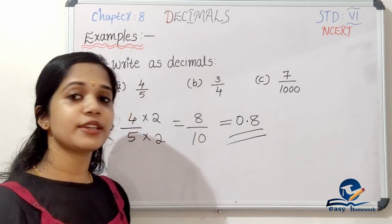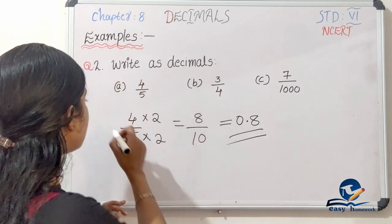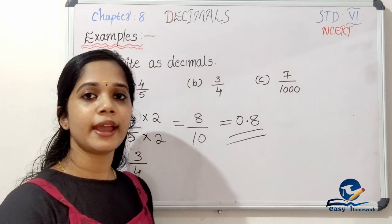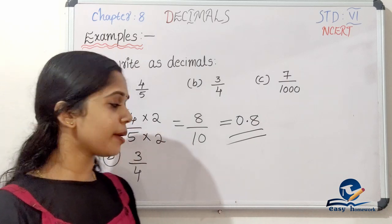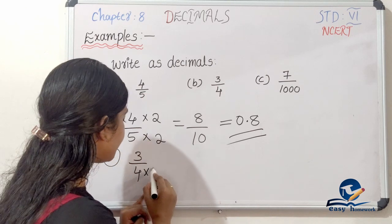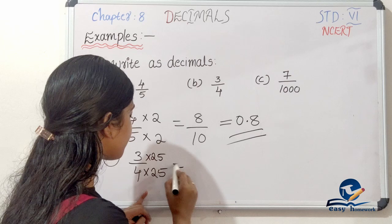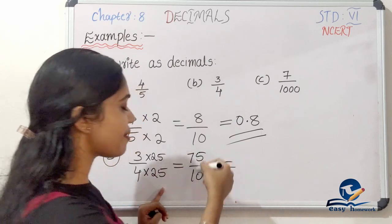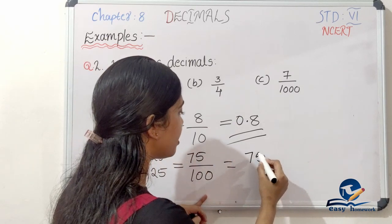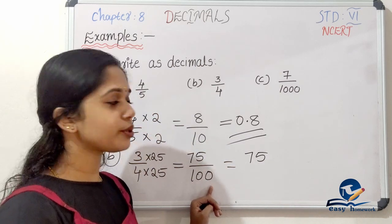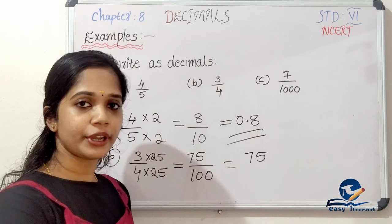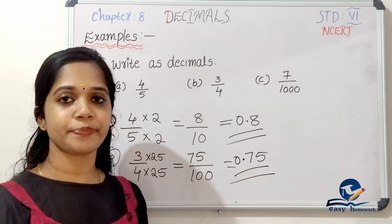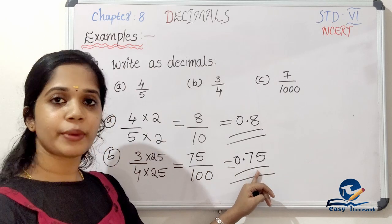The answer is 0.8. The second question is 3 by 4. If you want to make the denominator a power of 10, you find the equivalent power. Then 75 divided by 100. In the denominator we place the decimal point — first place, second place — giving us 0.75. So 3 by 4 in decimal form is 0.75.